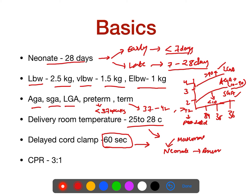Two questions may come from this: What is the use of delayed cord clamping? It will prevent anemia. And what is the duration of delayed cord clamping? 60 seconds. This is as per the WHO new protocol.